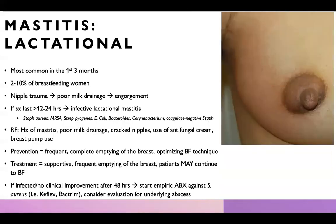Next, we'll talk about lactational mastitis, which most commonly occurs in the first three months after giving birth, occurring in 2–10% of breastfeeding women. The pathophysiology is typically nipple trauma resulting in poor milk drainage, causing engorgement of the breast and then mastitis. If symptoms last more than 12 to 24 hours, infective lactational mastitis can develop. The most common causing pathogens are listed here. Other risk factors include history of mastitis, poor milk drainage, cracked nipples, use of antifungal cream, and breast pump use. To prevent lactational mastitis, we should educate patients to perform frequent complete emptying of the breast and optimize breastfeeding techniques.